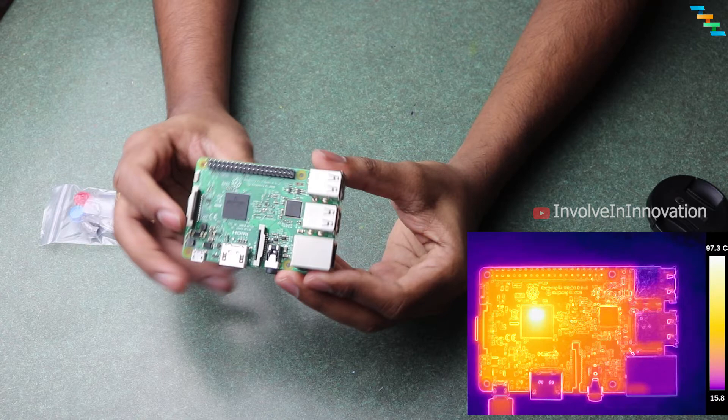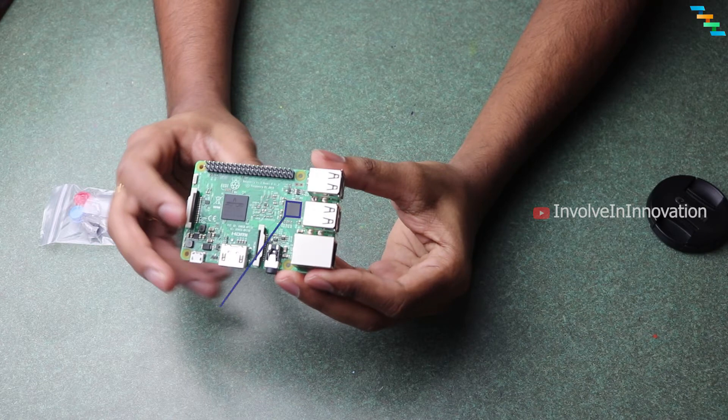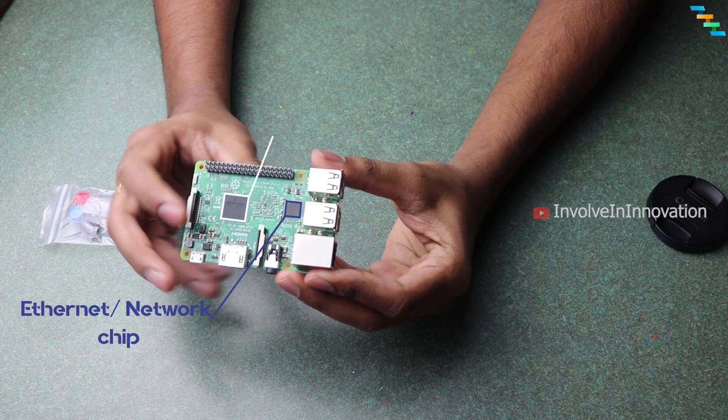This is the thermal image of a heated Raspberry Pi 3. This is the network or Ethernet chip and this is the processor. I am going to install Heatsink to both these.